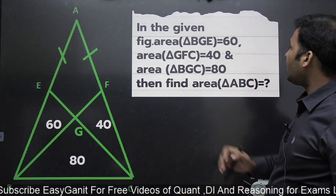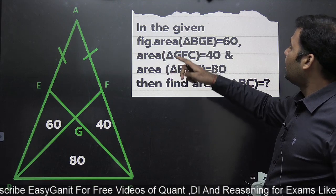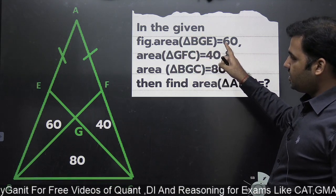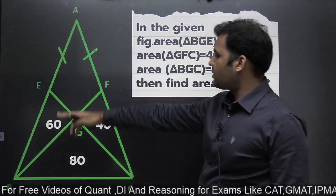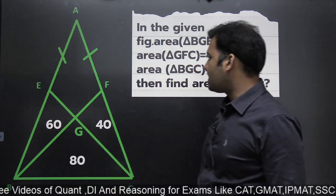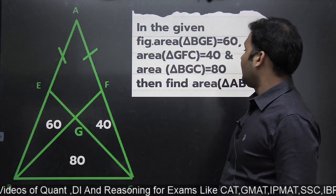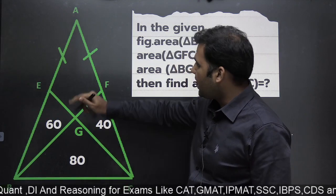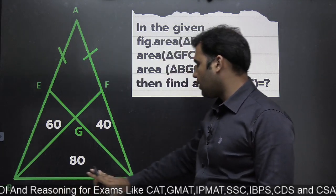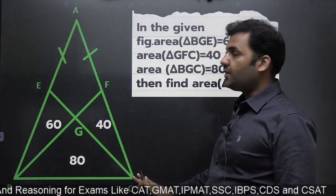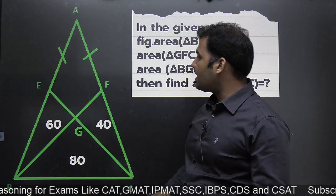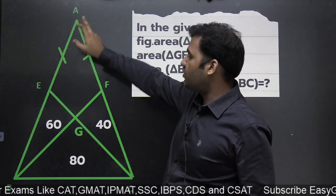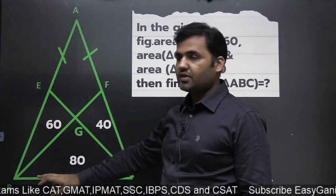Let's have a look at the question. It says that in the given figure, the area of triangle DGE is 60, the area of triangle GFC is 40, and this area is 80, and we are supposed to find out the area of the whole triangle ABC. If I just find out the area of this quadrilateral, I'll be able to find out the area of this complete triangle.